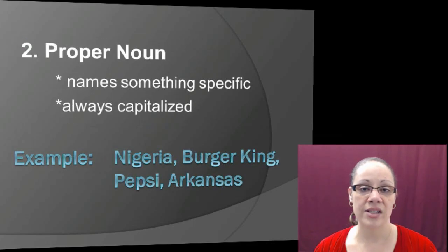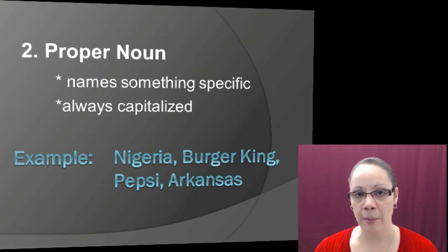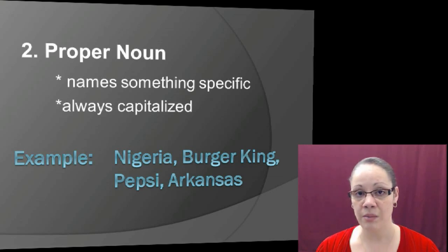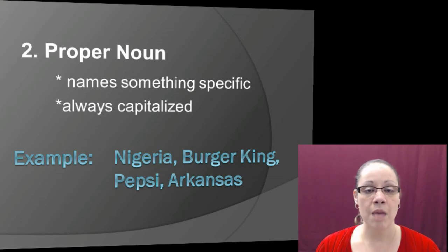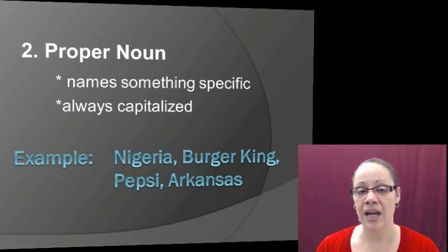The second type is the proper noun, which names something specific and is always capitalized — whether at the beginning, middle, or end of a sentence. Examples include Nigeria, Burger King, Pepsi, and Arkansas. A proper noun is always capitalized no matter its position in the sentence.